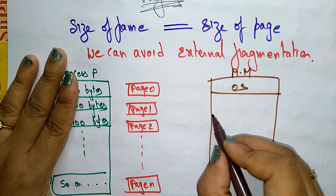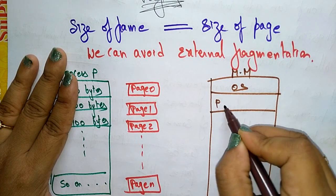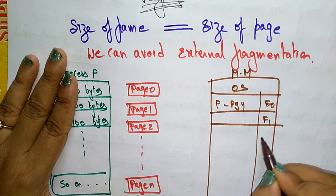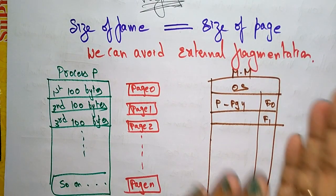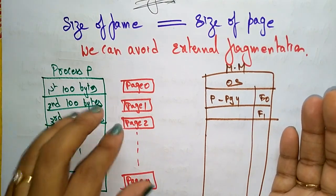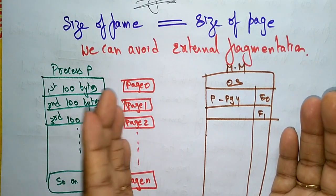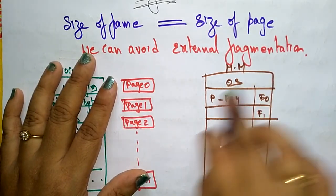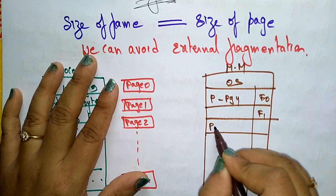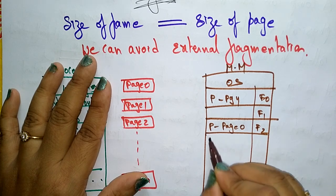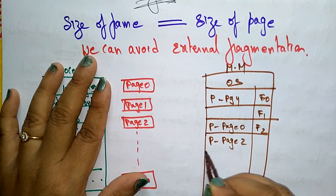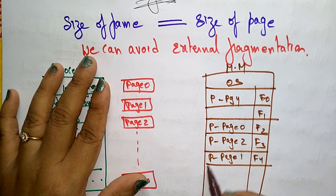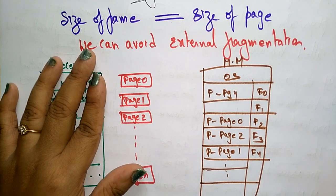In main memory, the operating system resides first, and the rest is divided into frames: F0, F1, F2, F3, and so on. Whatever data we send from virtual memory to main memory is sent in the form of pages. The main memory is divided into frames — frame zero, frame one, etc. Page zero is stored in frame zero, page two in F2, page one in F3, page four in F4, and so on.